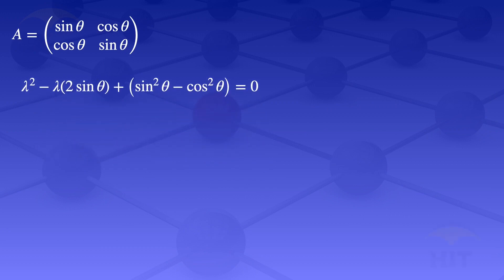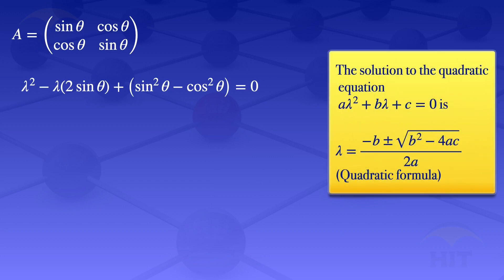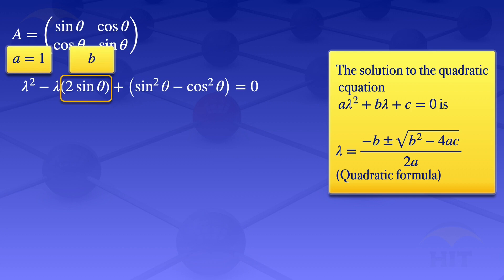When solving quadratic equations we can try to find factors, but in this case we can't, so we use the quadratic formula. For aλ² + bλ + c = 0, the solution is λ = (−b ± √(b² − 4ac)) / 2a. In our equation, the coefficient of λ² is 1, so a = 1, and the coefficient of λ is −2 sin θ, so b = −2 sin θ.